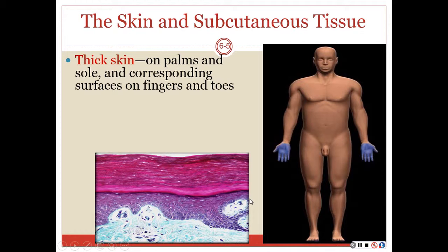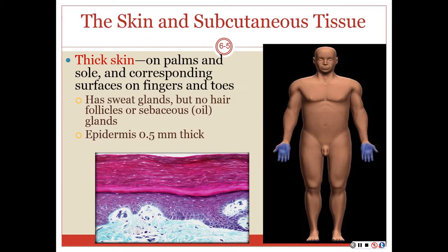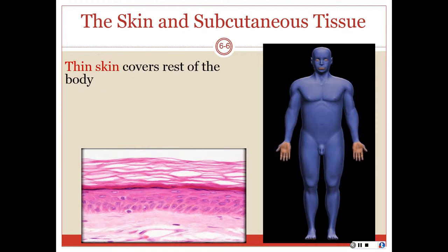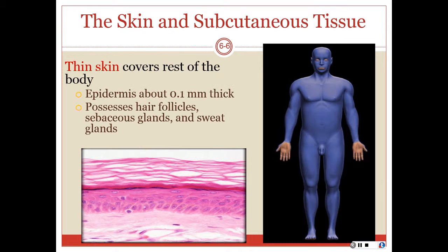Let's talk about thick skin. Thick skin covers the palms, the soles of the feet, and corresponding surfaces of the fingers and toes. It contains sweat glands. Thin skin covers the rest of the body and contains hair follicles, sebaceous glands, as well as sweat glands.